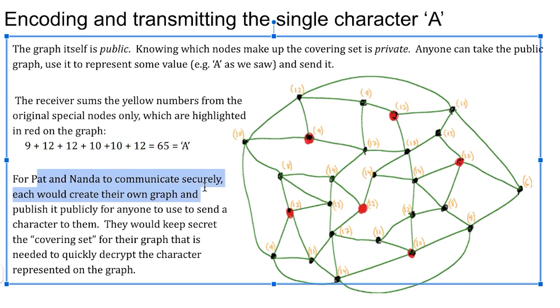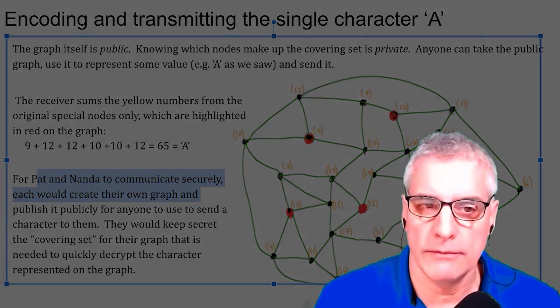So for Pat and Nanda to communicate securely, each would create their own graph. They would publish the graph itself, the structure of it, what's connected to what publicly. But what they would keep secret is what are those special, in this case, six nodes that are the covering set that represent the entire graph, which would be required to be able to quickly decipher what the letter is that's being transmitted using that graph.